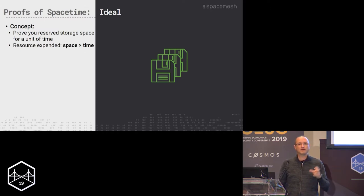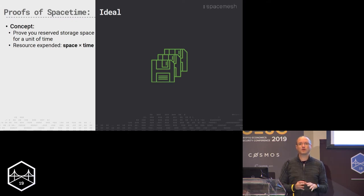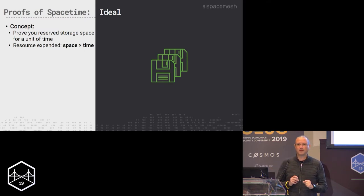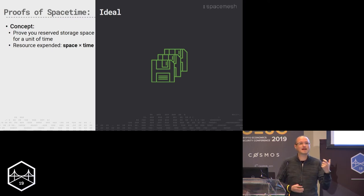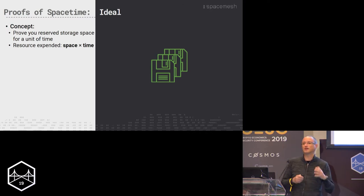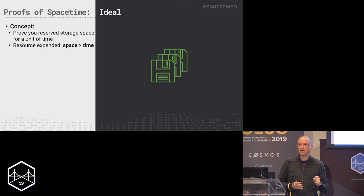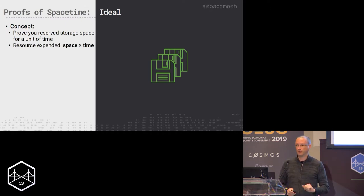We want to show that you basically reserved a piece of your disk — your hard disk — for a unit of time. This is why we call it space-time: you're storing something for a week. This is actually the cost you pay. If you buy storage from Amazon, you're not paying for a gigabyte — you're paying for a gigabyte for a month. So space-time is actually the right unit to measure here. The limited resource is your disk space over time, and you want to prove that you stored something and made your disk inaccessible for anything else for that period.